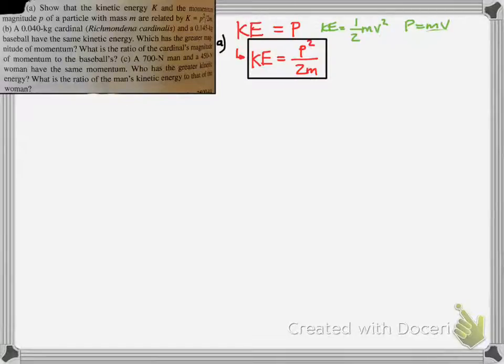What we're going to want to do is see how we can manipulate it to look like p²/2m. Well, you can solve the momentum equation for v, and you get v = p/m. You simply substitute this into the kinetic energy equation.